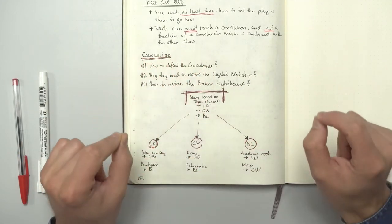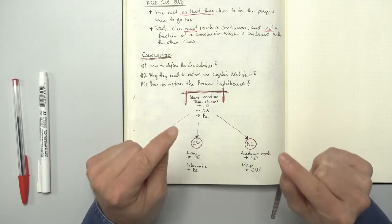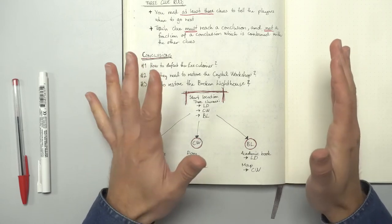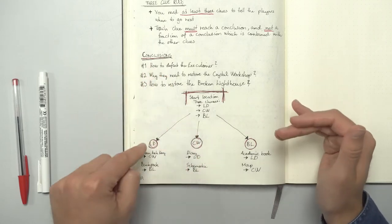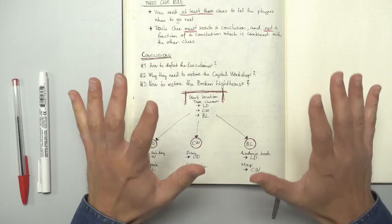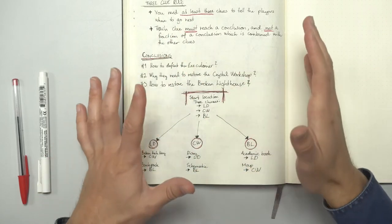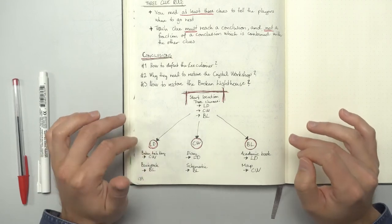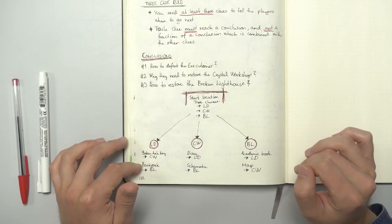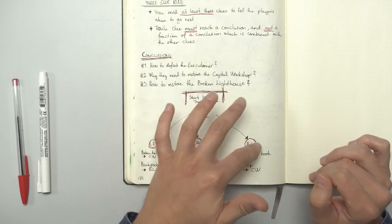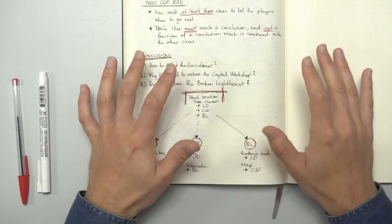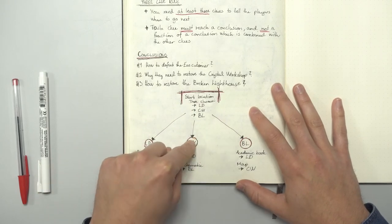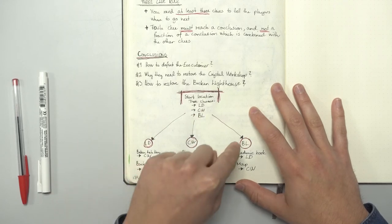Now, this start location has three clues, which means that the players will at least be able to get one of them. And as I said, the three clue rule means that you need at least three clues for the players to reach a conclusion. It just happens that in this case, the conclusion either leads them to the dungeons, the workshop or the lighthouse. Now, let's say they conclude to go to the lower dungeons first. Here, when they investigate and hopefully defeat the executioner, they encounter two new clues. A dropped bag and an arch key needed to be repaired. Either leading to the lighthouse or the workshop. And now the players have four clues. Two to each location. One clue from the start location and the broken arch key will lead to the crystal workshop. And the other from the start location and the backpack will lead to the broken lighthouse. Again, the three clue rule is held since they have at least three clues to reach a conclusion.